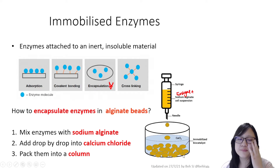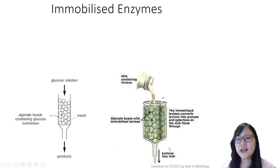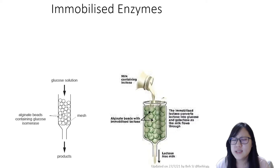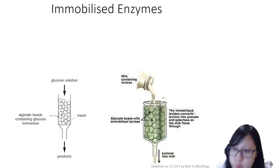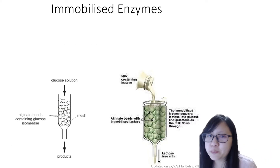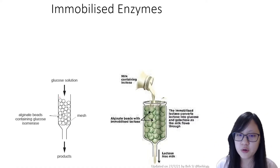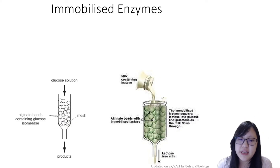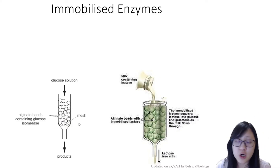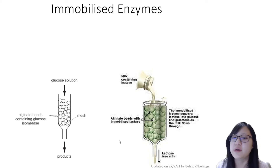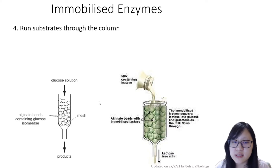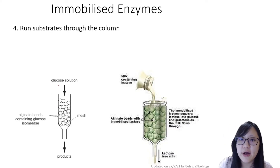Once the beads are formed, we take them and pack them into a column. A column is typically made by taking a syringe, removing the plunger, placing a small mesh at the bottom, and packing the alginate beads inside. The industrial-sized versions are much bigger, but the principle is the same. This column contains all the alginate beads.